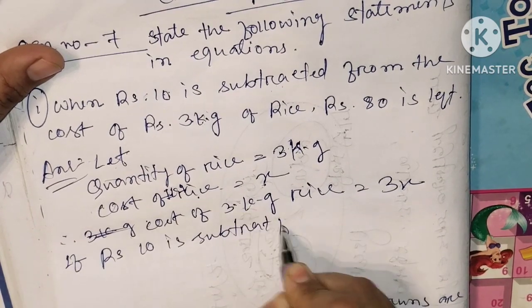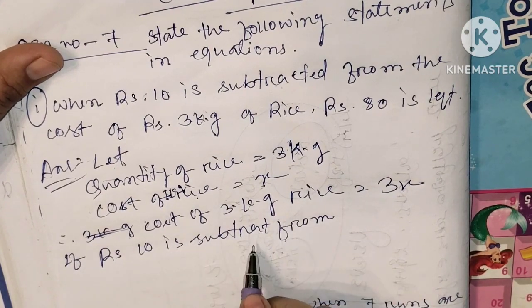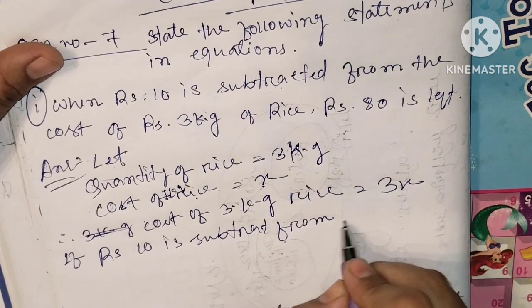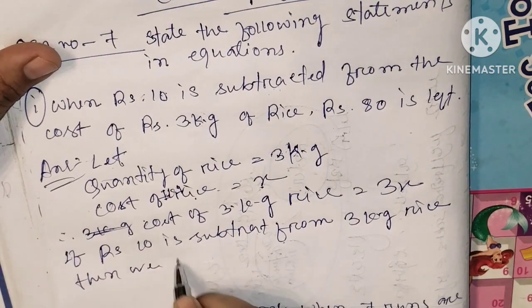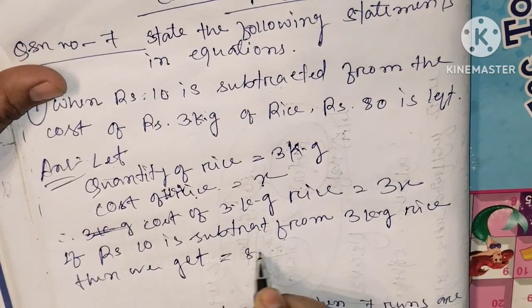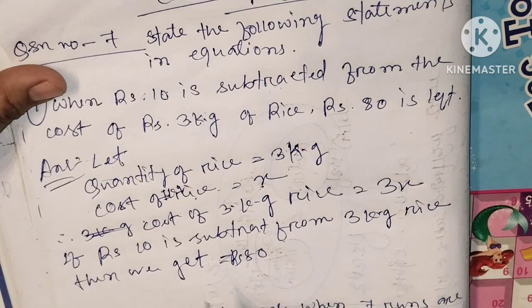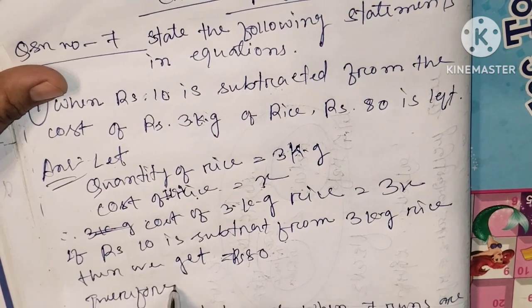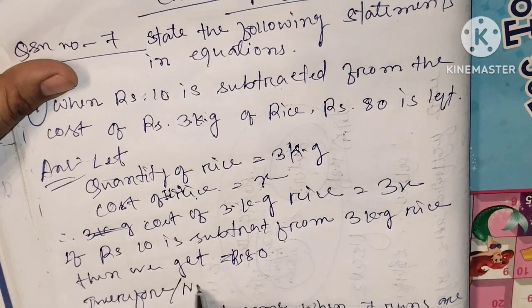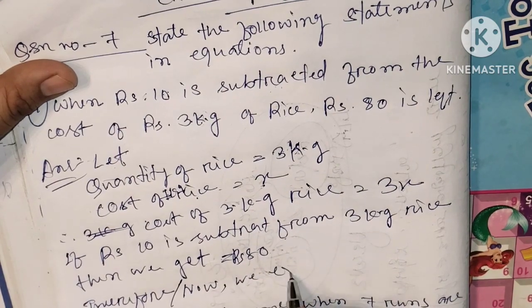...from 3 kg of rice, then we get 80 rupees. Therefore, now we express it — we express it as an equation.